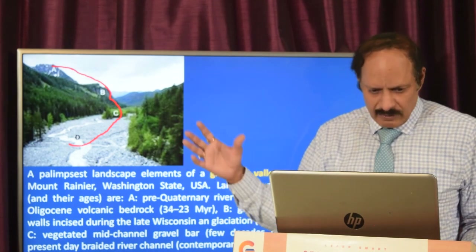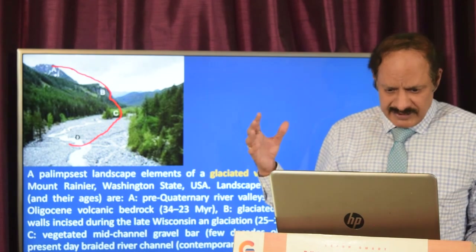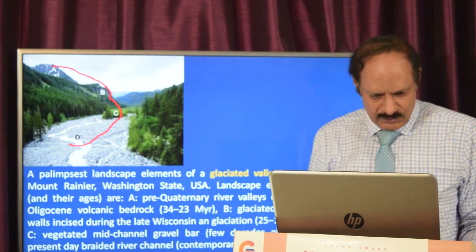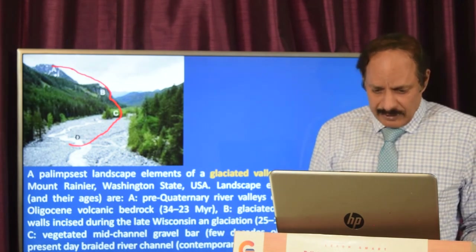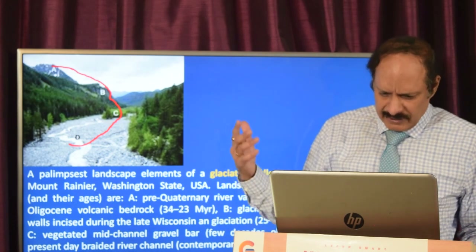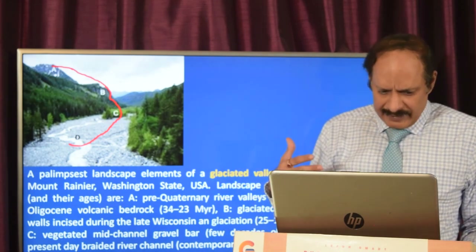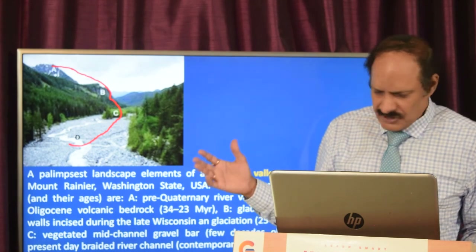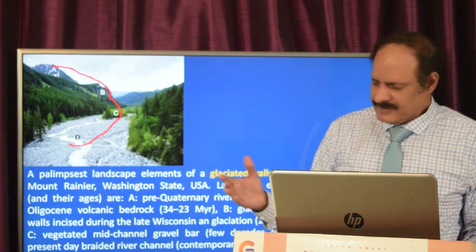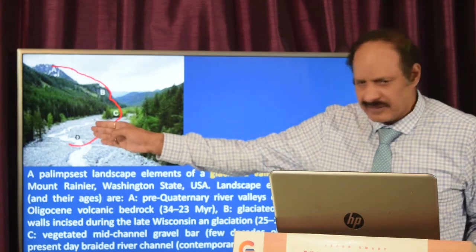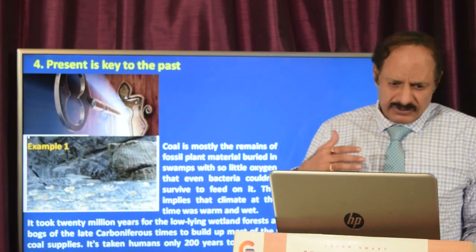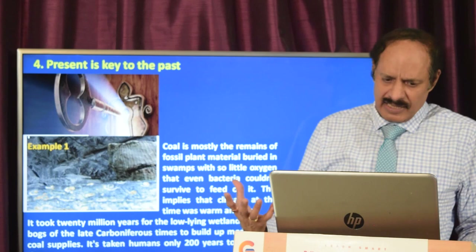A good illustration of palimpsest landscape elements is a glaciated valley showing: A — pre-Quaternary river valleys cut into Eocene volcanic bedrock; B — glaciated valley walls incised during late Wisconsin; C — vegetated mid-channel gravel bar; and D — the present-day braided stream. This is essentially also related to channel morphology.